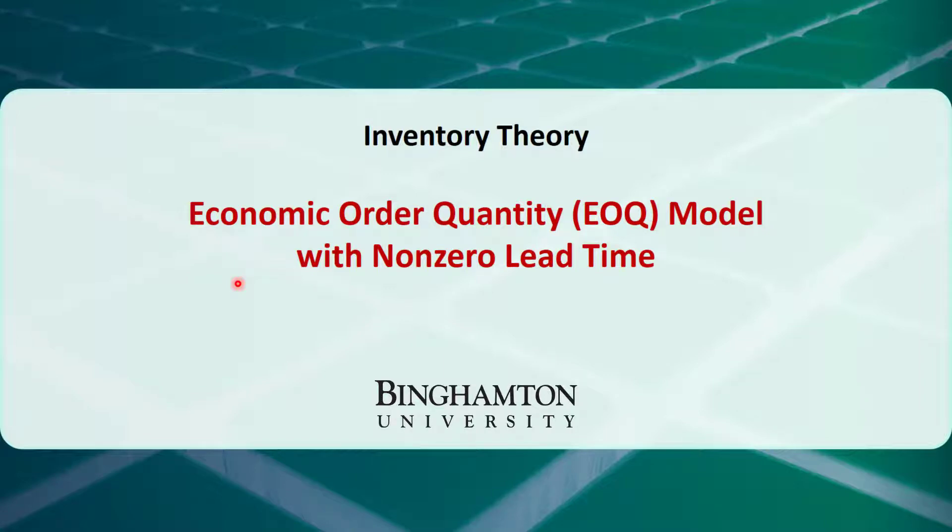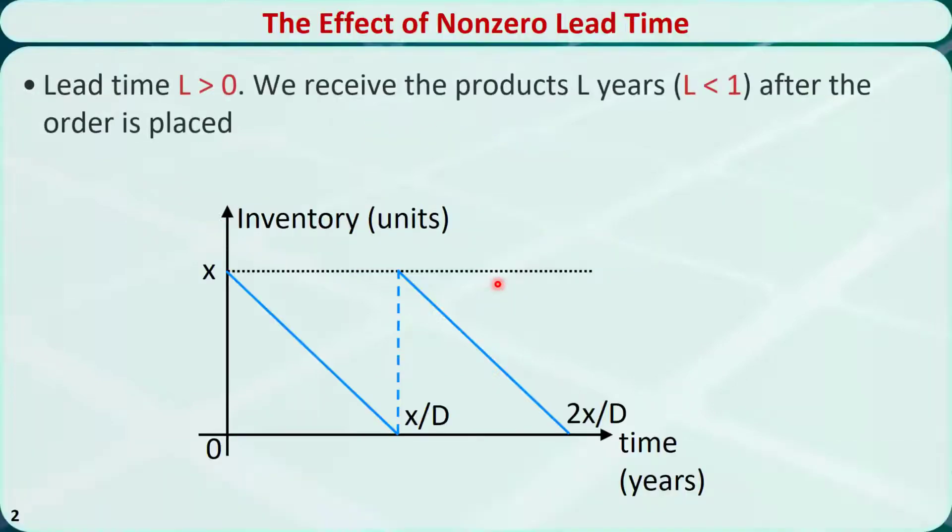In this video, I will talk about the economic order quantity EOQ inventory model with non-zero lead time and deterministic demand. The lead time is a known constant number, denoted with capital letter L. If the lead time is greater than 0, we will receive the products L years after the order is placed. Usually, L is a fraction of 1 year, so it is less than 1.